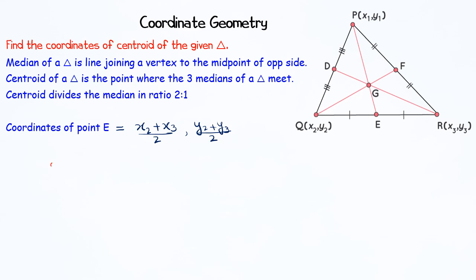We know the coordinates of point E, which are (x₂ + x₃)/2 and (y₂ + y₃)/2. We have to find the coordinates of point G, which divides the line in the ratio 2:1.